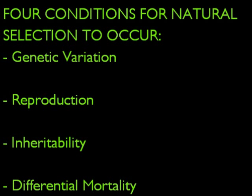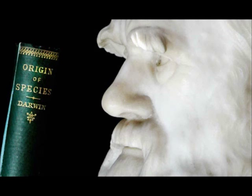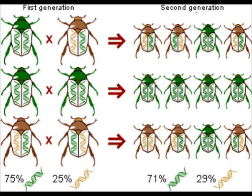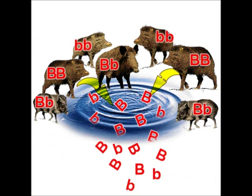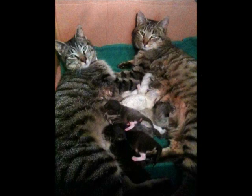Under four conditions will this process take place. Genetic variation differentiates alleles, brought by mutation, decoding reveals. Adding to the gene pool, the fittest will float.